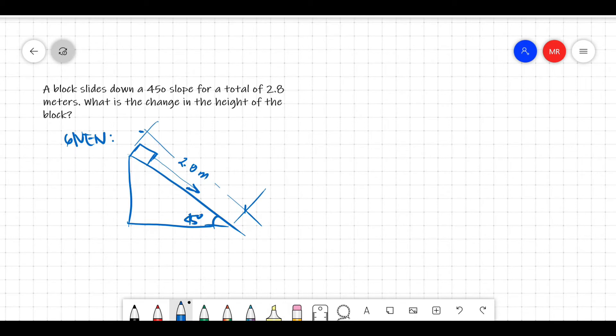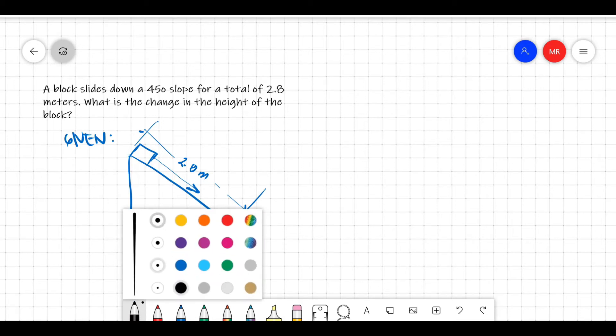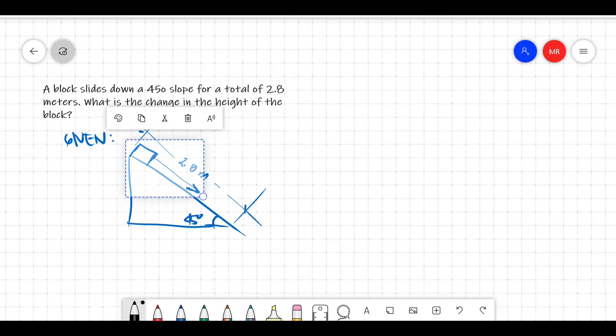So we are being asked to find the change in the height of the block. If we are being asked to find the change in the height when the block is in this position after it slides, the change in height is from this point to this point. So therefore we are just being asked for this height.